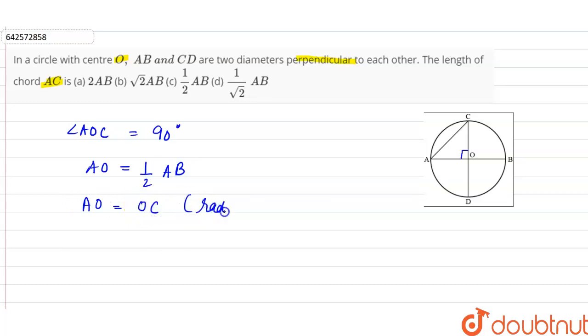So in triangle AOC, we can apply Pythagorean theorem. So Pythagorean theorem says that AC square is equal to OC square plus OA square.